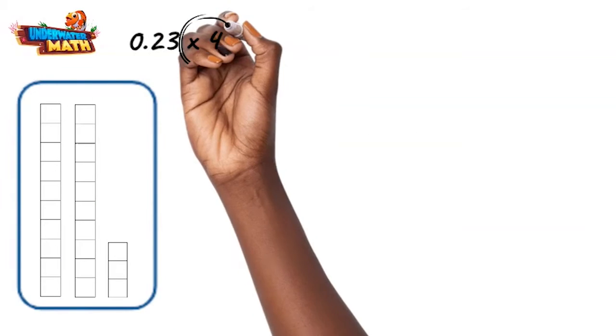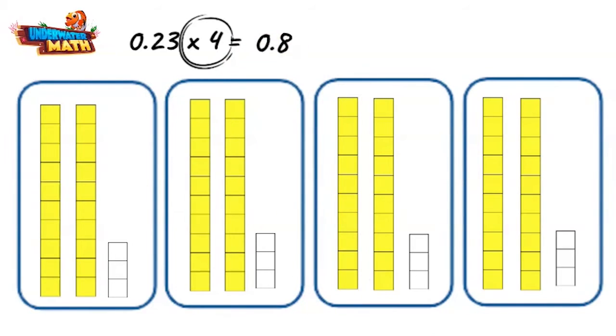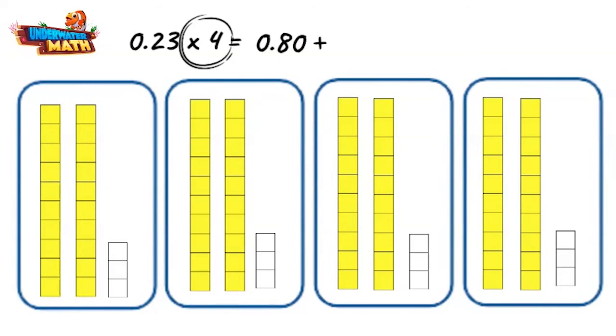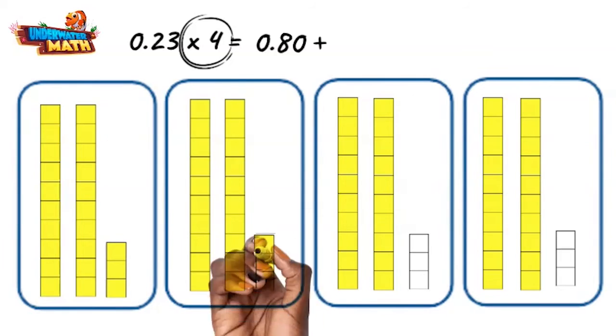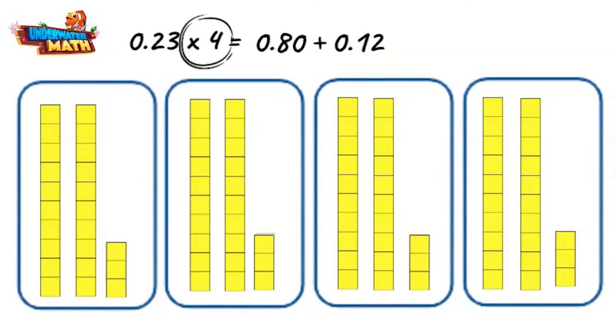Now we add up all the ten blocks, which makes eight tenths, also called eighty hundredths. And then the three hundredths—we have three, six, nine, twelve hundredths. This makes ninety-two hundredths.